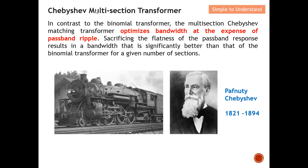Let's understand the key difference between Chebyshev and binomial multi-section transformers. In contrast to the binomial transformer, the multi-section Chebyshev matching transformer optimizes bandwidth — the key idea is how to control the bandwidth. However, the trade-off is ripple in the passband. In short, Chebyshev gives you larger bandwidth but you need to tolerate some ripple in the passband. With binomial, you hardly have any ripple but you have a very narrow bandwidth.